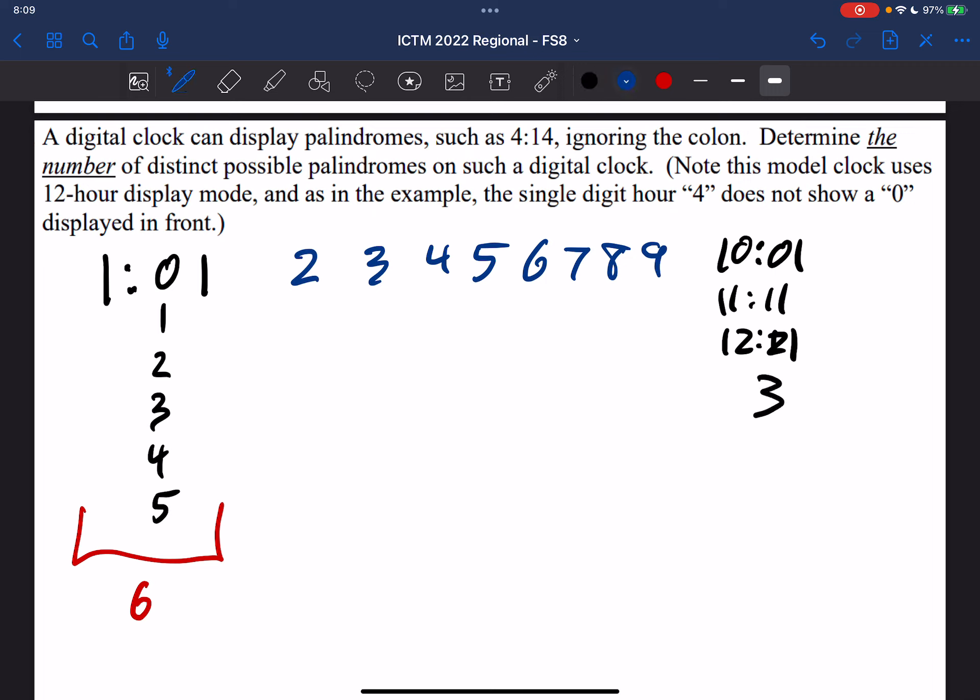So what we have is we have 6 times 9, and then we add 3. So that's 54 plus 3, and that gives us 57 as the number of possible palindromes.